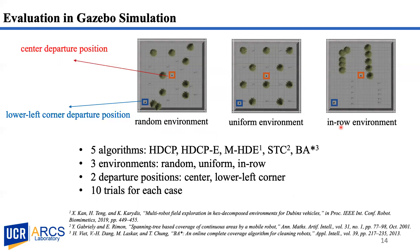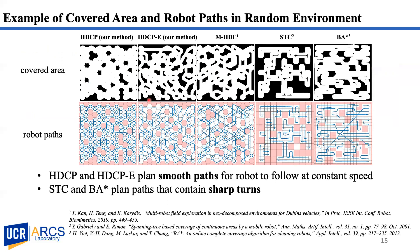To eliminate the influence of starting position, the robot is deployed from two different positions: center and the lower left corner. We maintain 10 trials for each scenario to reduce the uncertainty in obstacle detection caused by online perception and odometry drift. This figure shows an example of planned passes and covered area for five algorithms in a random environment when the robot departs from the center position.